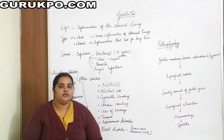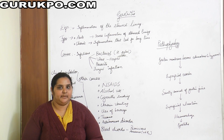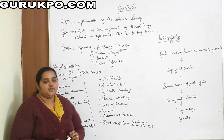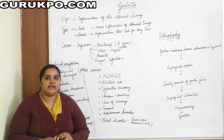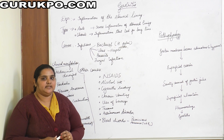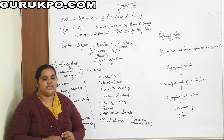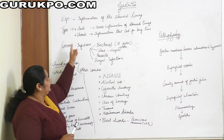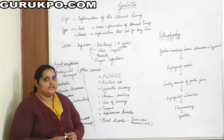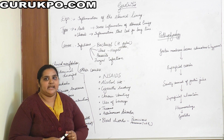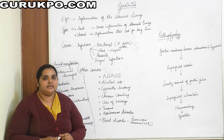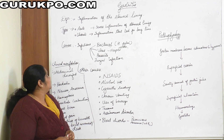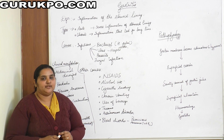Hello friends, myself Sonia John, assistant professor from the nursing department. Today I am going to take a topic that is gastritis. Gastritis comes under the GI system, specifically the gastric system. Gastritis is defined as the inflammation of the stomach lining — the stomach lining becomes irritated with certain substances, causing inflammation. It is of two types: acute and chronic.